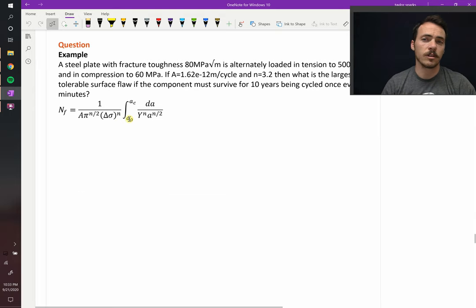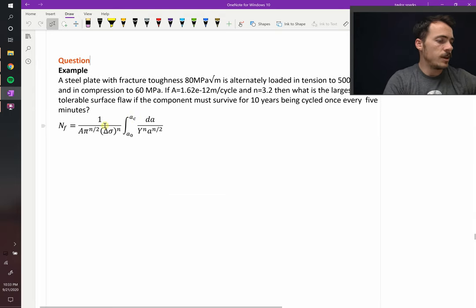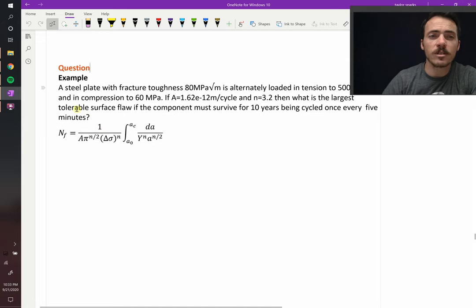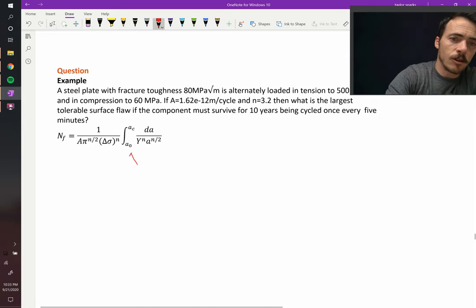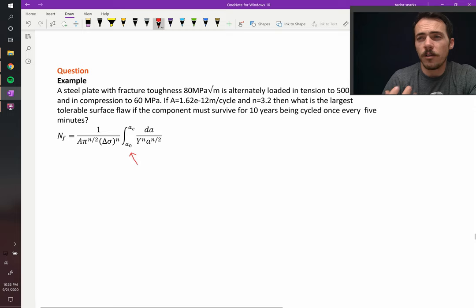So we are reminded what the crack growth equation is. How do we go about doing this? Since in this case we're solving for the largest tolerable surface flaw, that's A0, we're being asked to solve for A0, we better have all the other variables.